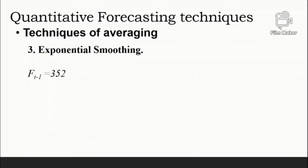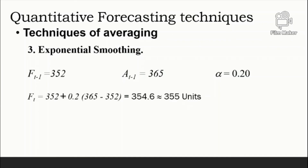For example, suppose the previous forecast was 352 units, actual demand was 365 units, and alpha equals 0.2. The new forecast would be: Ft equals 352 plus 0.2 multiplied by (365 minus 352), which equals 354.6, approximately 355 units. Exponential smoothing should begin several periods back to enable forecasts to adjust to the data instead of starting just one period back.